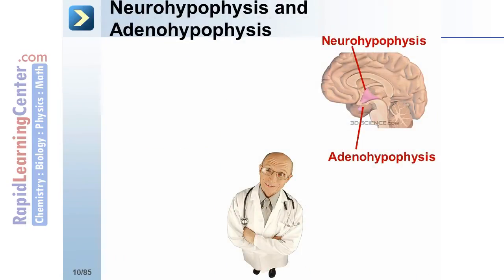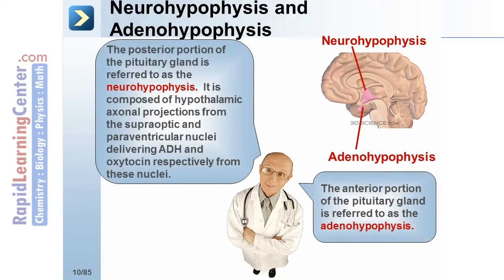Now let's take a closer look at the pituitary. The posterior portion of the pituitary gland is referred to as the neurohypophysis. It is composed of hypothalamic axonal projections from the supra-optic and paraventricular nuclei, delivering ADH and oxytocin respectively from these nuclei. The anterior portion of the pituitary gland is referred to as the adenohypophysis.